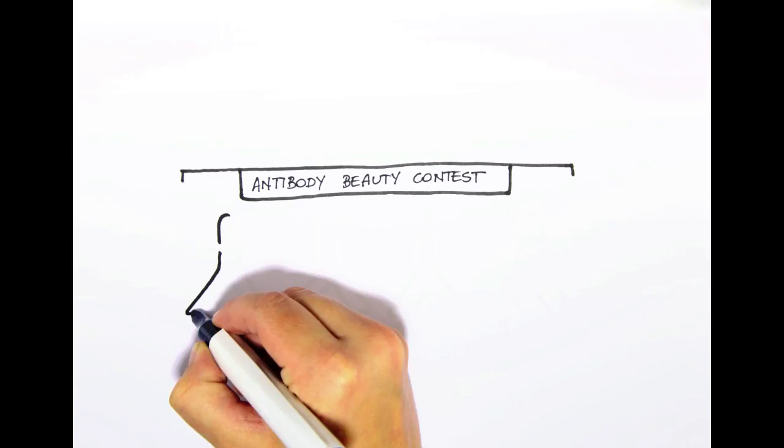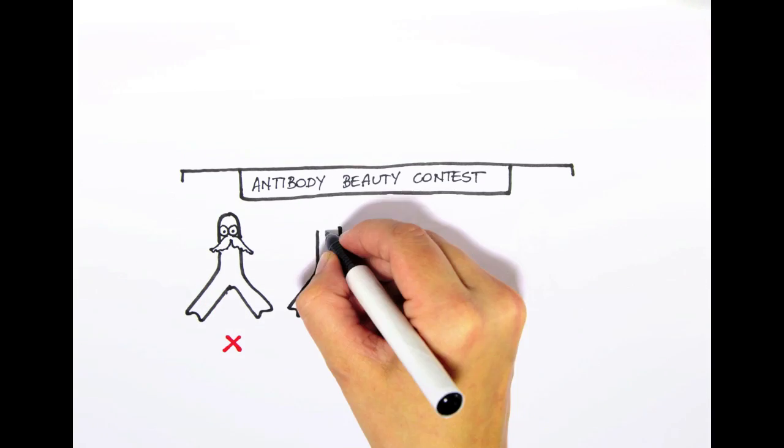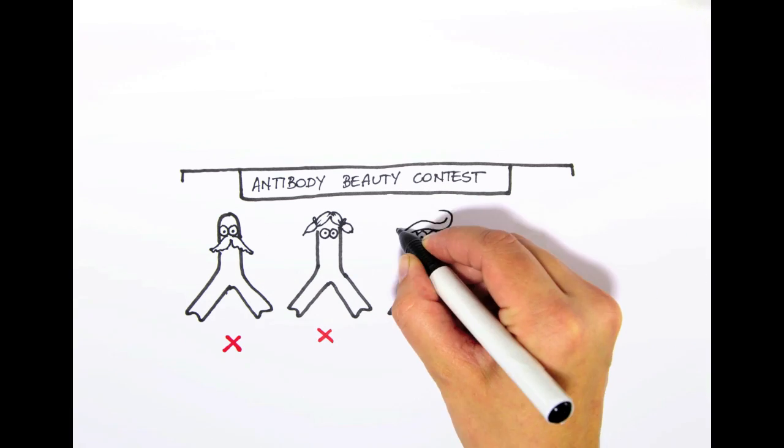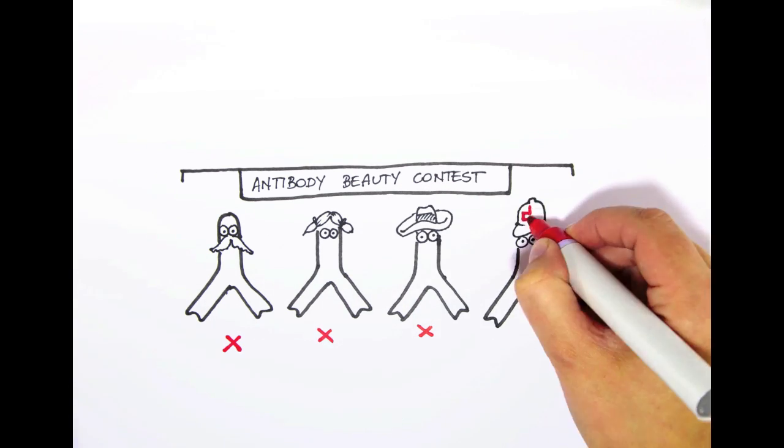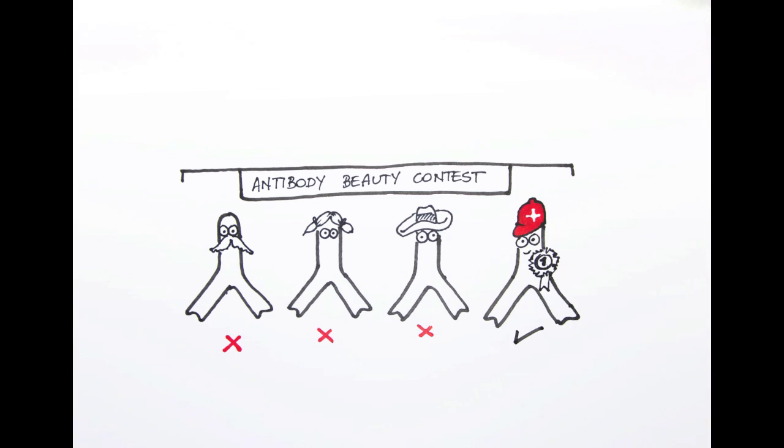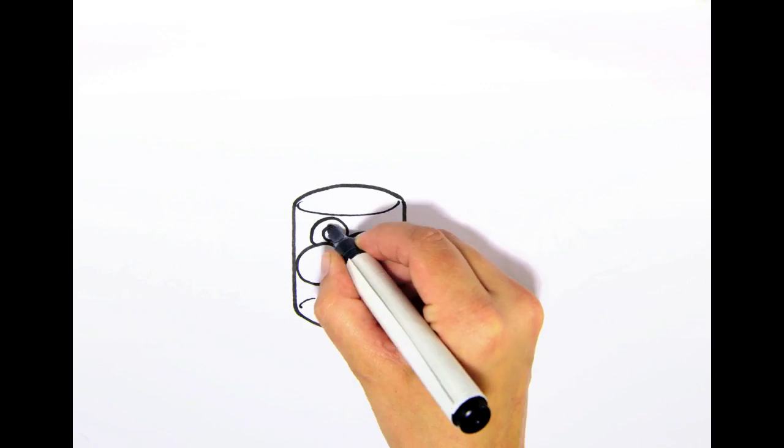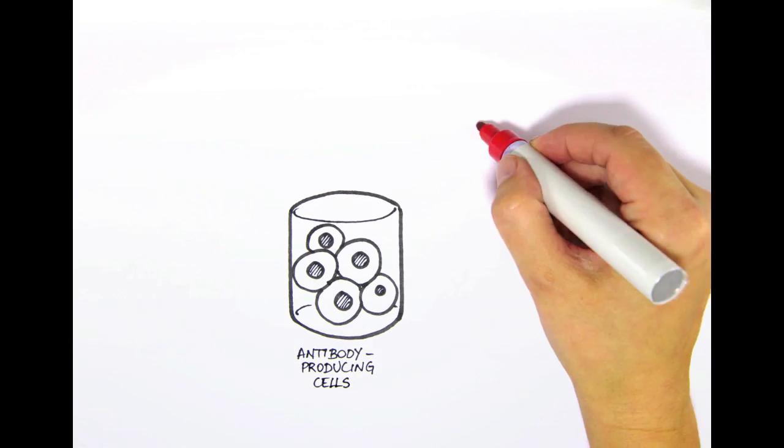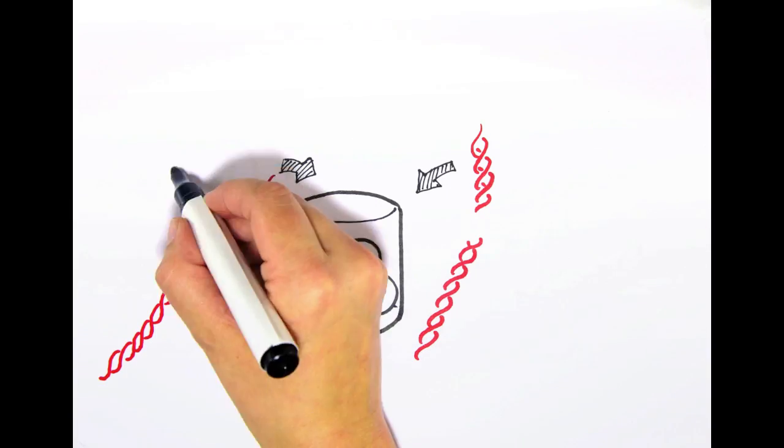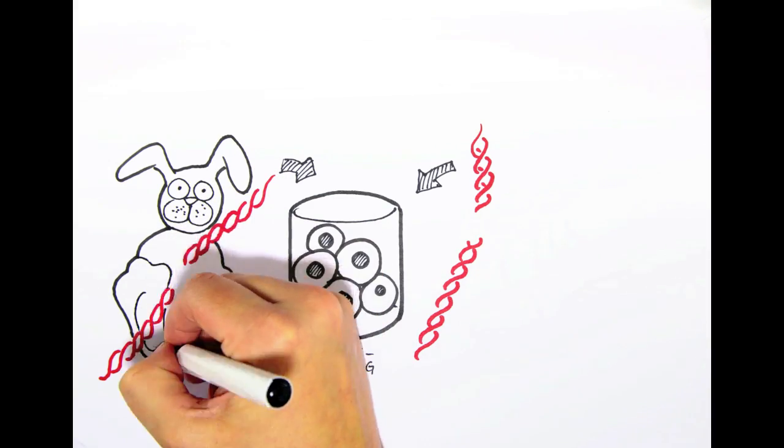The design and production of therapeutic antibodies is not trivial. An antibody has to interact with a target antigen, but it also has to be recognized by the immune system as a legitimate messenger. Today therapeutic antibodies are produced in yeasts, bacteria or special cell lines, starting from genetic information from humans, rodents or rabbits.